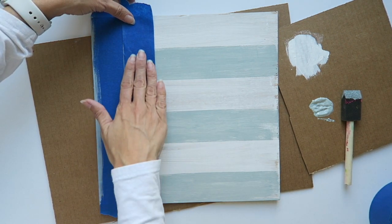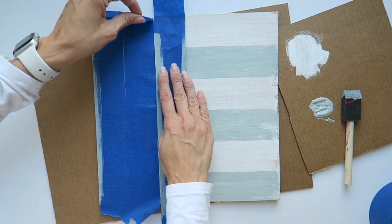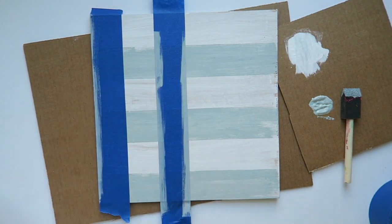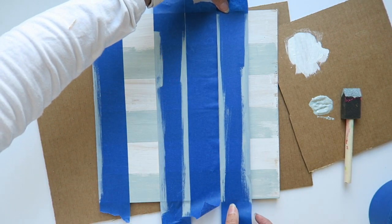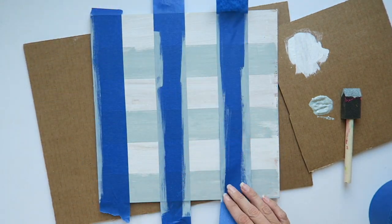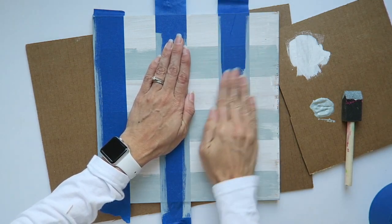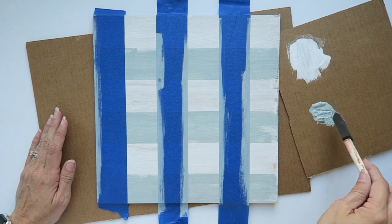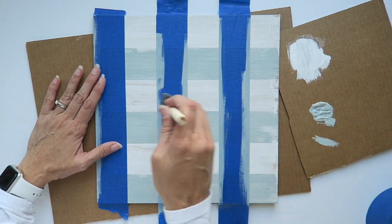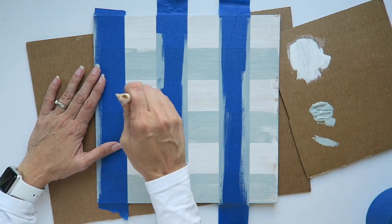Again, use a spacer to mark the space. Then push down the tape that you're putting on as you do stripes the other direction. Now, you are going to paint again after you have taped off your pattern. This time you are going to use the same medium color on your project.